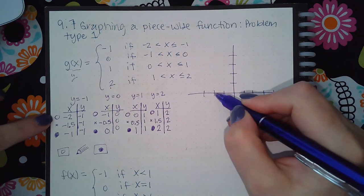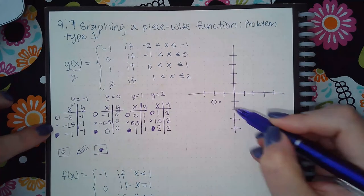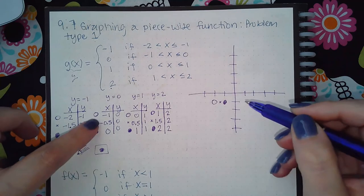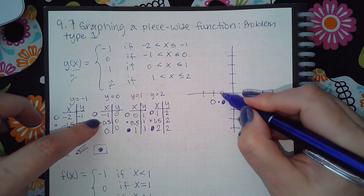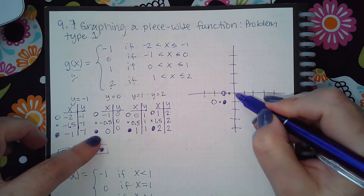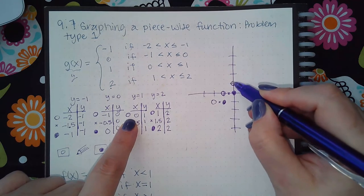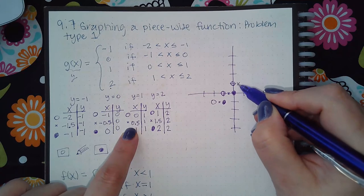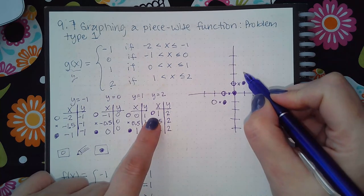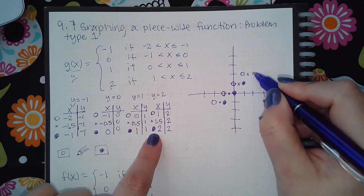Plotting all points: negative 2 and negative 1 — open dot; negative 1.5 and negative 1 — little x; negative 1 and negative 1 — solid dot. Then negative 1 and 0 — open dot; negative 0.5 and 0 — little x; 0 and 0 — solid dot. Then 0 and 1 — open dot; 0.5 and 1 — x; 1 and 1 — solid dot. Then 1 and 2 — open dot; 1.5 and 2 — little x; 2 and 2 — solid dot.